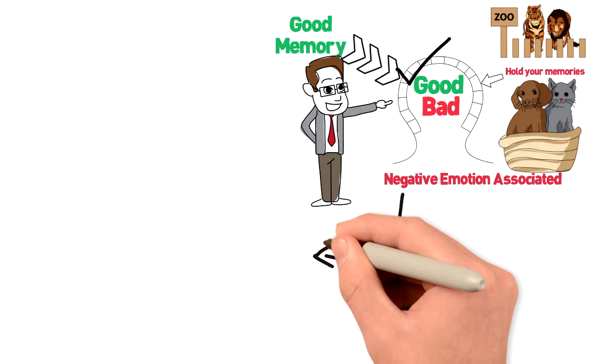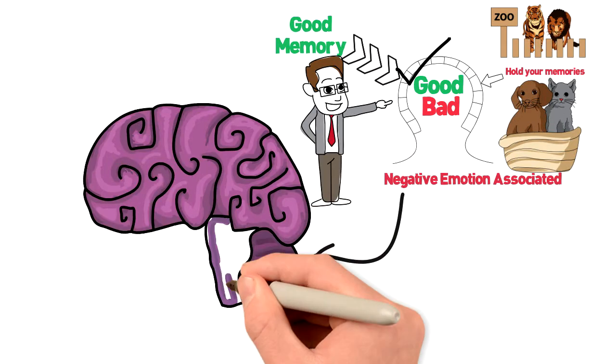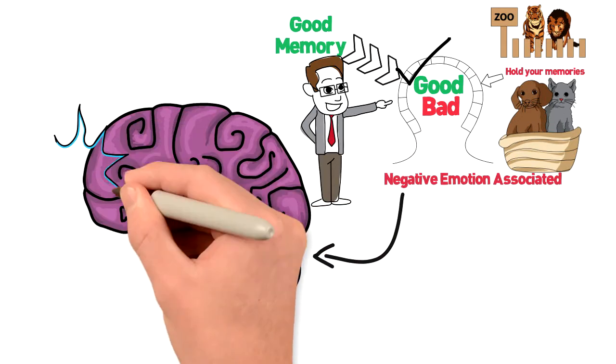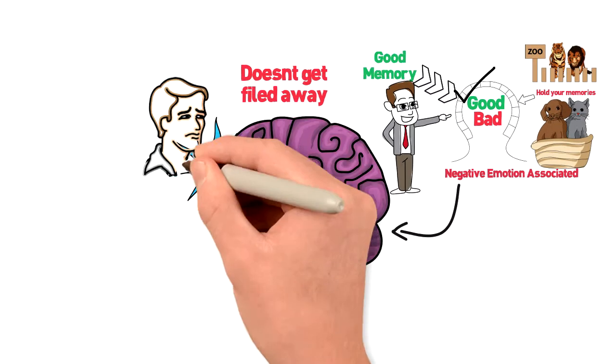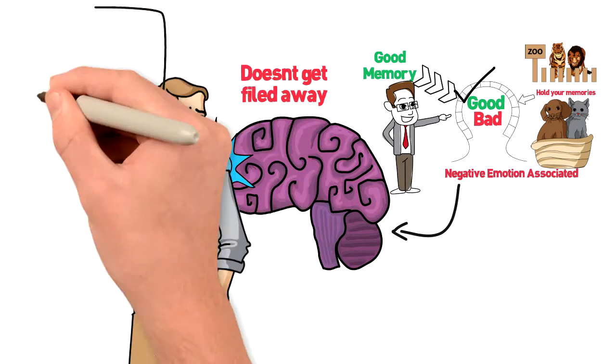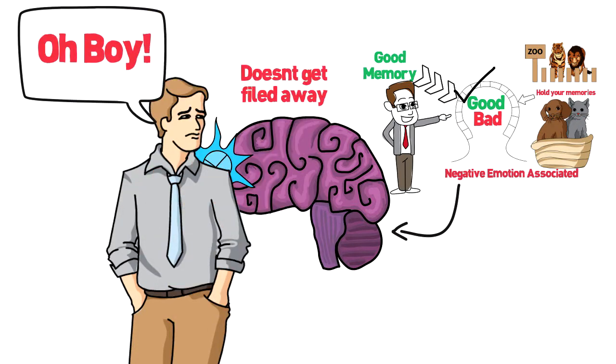If there is a negative emotion associated with the experience, then the memory stays in the frontal or sorting area of the mind. It doesn't get filed away and sits there until a similar experience happens again.